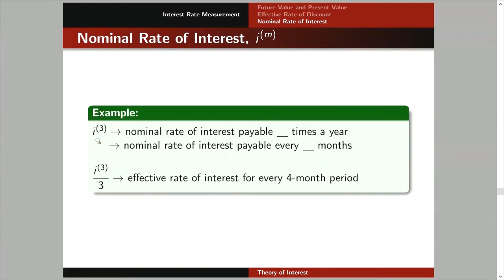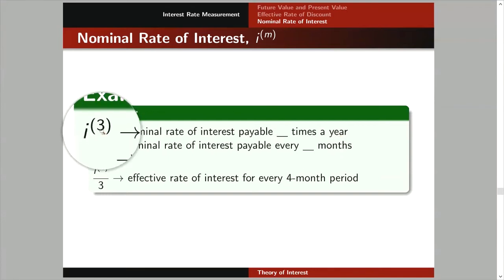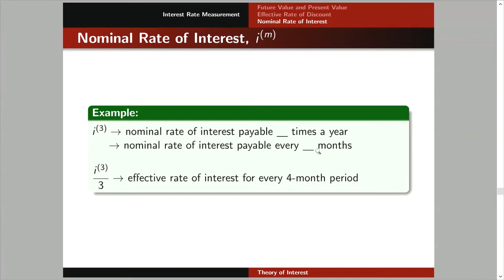Let me give you an example. We have I upper 3. This is the nominal rate of interest payable 3 times a year — compounded, convertible 3 times a year. Or it can also be described as the nominal rate of interest payable every how many months? If payable 3 times a year, it is payable every 4 months — 4, 8, 12.